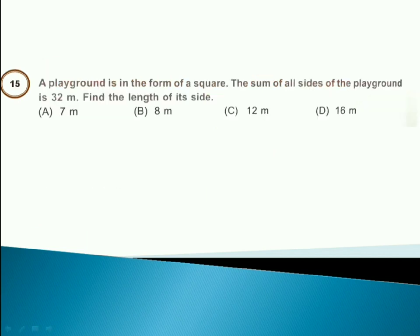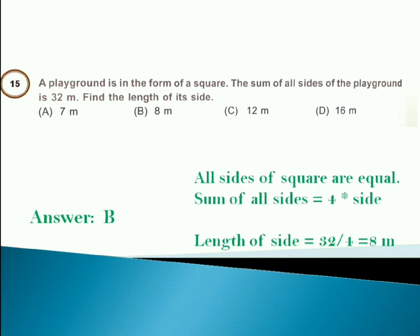A playground is in the form of a square. The sum of all sides of the playground is 32 meters. Find the length of its one side. Answer is option B. Because all sides of squares are equal. Sum of all sides is 4 multiplied by side. Length of side is 32 by 4 is 8 meter.